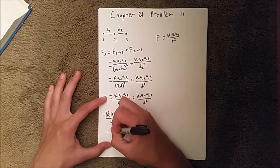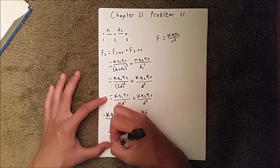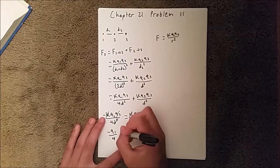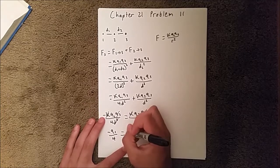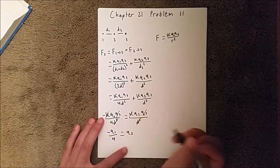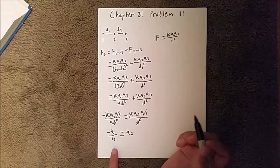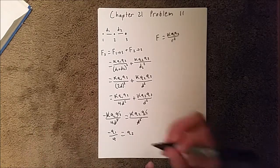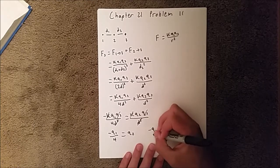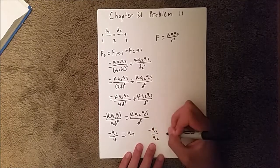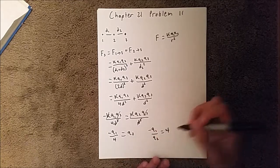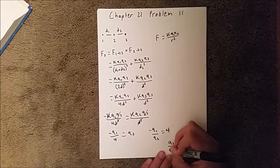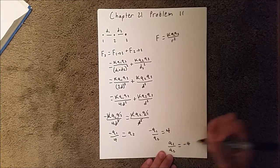So here we're going to have negative q1 over 4, negative charge 1 over 4, and that's going to be equal to q2. And then if we simplify this, we can flip these two, and then we will get negative q1 over q2 is equal to 4. And if we just move that negative over to the other side, we find that the ratio between charge 1 and charge 2 is equal to negative 4.